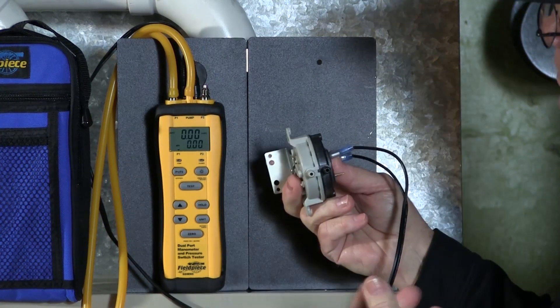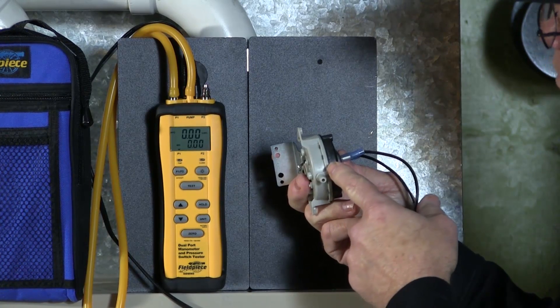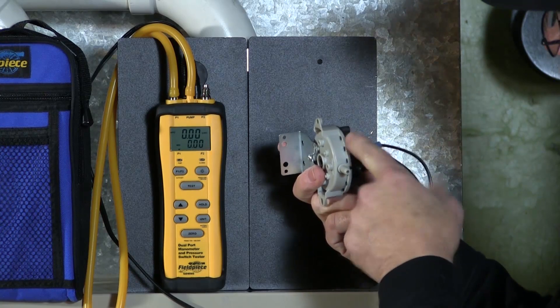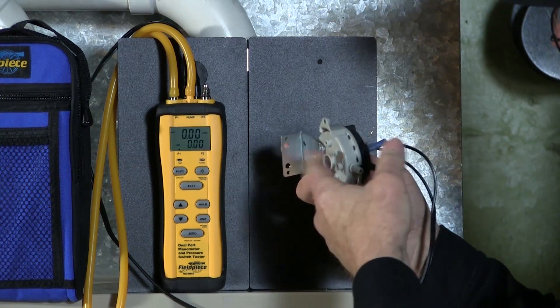Now, one thing about testing pressure switches with dual ports: it only has one diaphragm, one spring in here, as you just now saw. So test the negative side. That's this one right here.